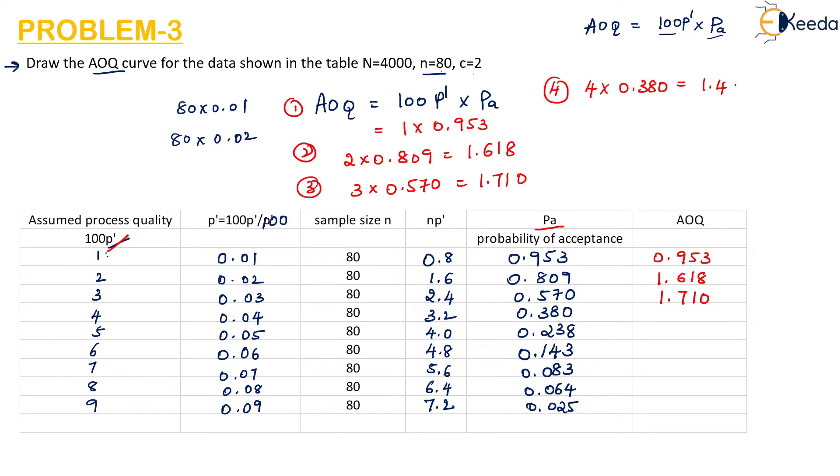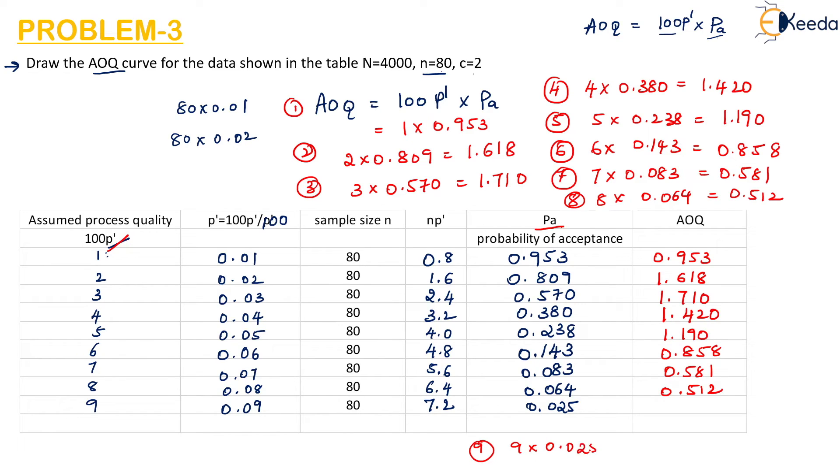The fifth term, it is 5 x 0.238, 1.190. 6 x 0.143, that is 0.858. For this last term, it is 9 x 0.025, this will give us 0.225.